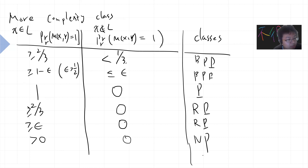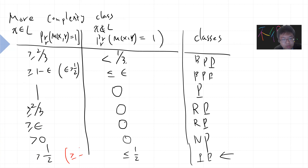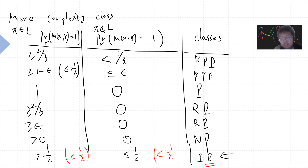There's a different complexity class called PP, which is connected to quantum computing and the counting theorem. PP uses strictly greater than half as the threshold. Interestingly, you can prove that if you take greater than half and less than half as thresholds, you still get PP.